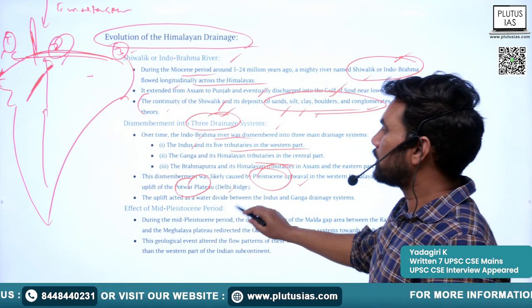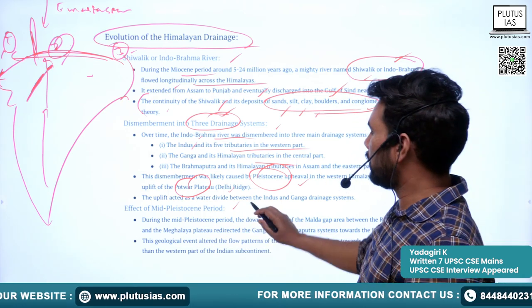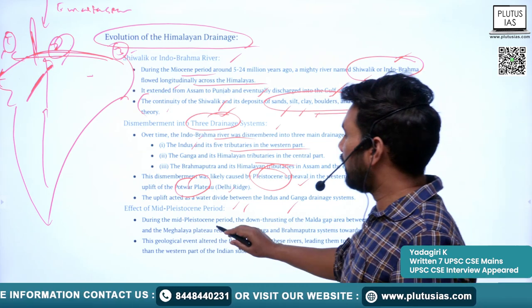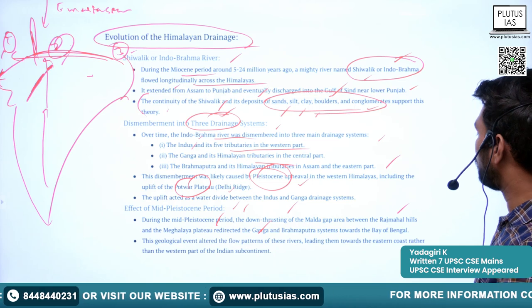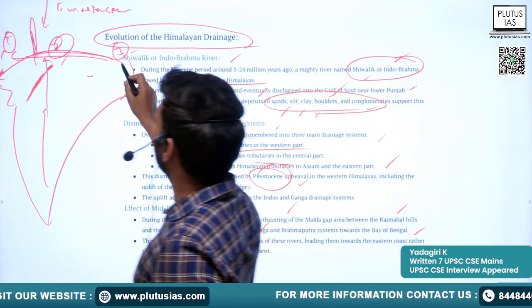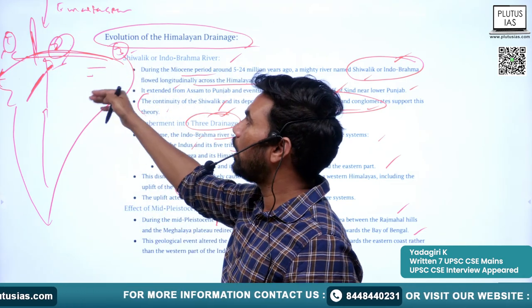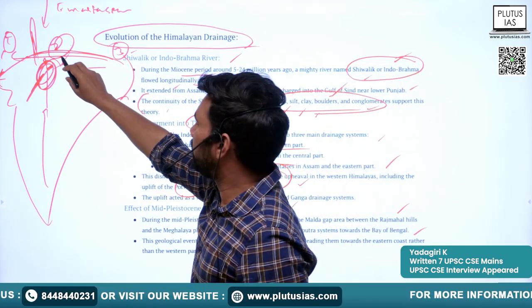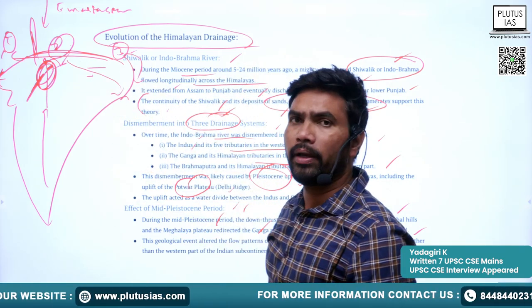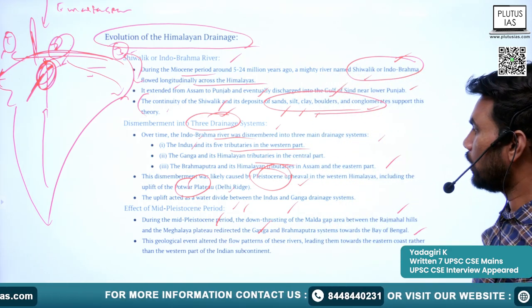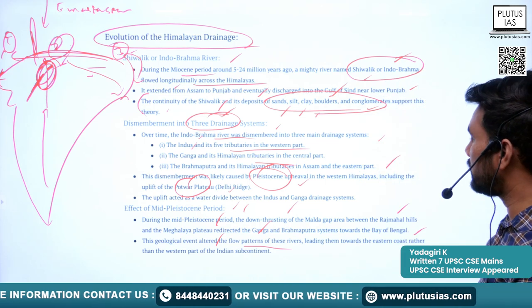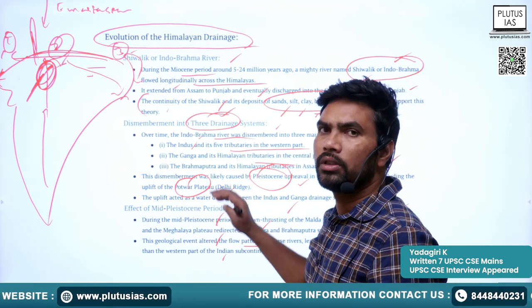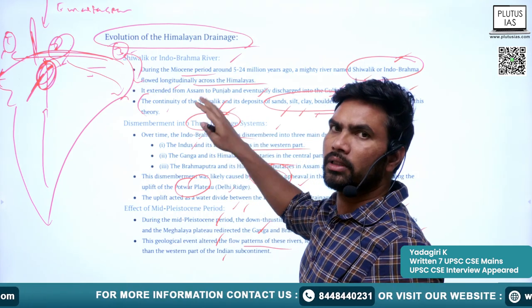During the mid-Pleistocene period, the downthrusting of the Malda Gap area between the Rajmahal Hills and the Meghalaya Plateau redirected the Ganga and Brahmaputra systems toward the Bay of Bengal. Previously these rivers flowed westward, but this geological event altered their flow patterns toward the eastern coast rather than the western part of the Indian subcontinent. This is how the three major Himalayan river systems emerged.